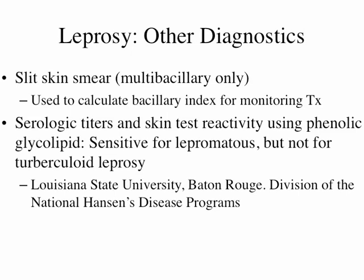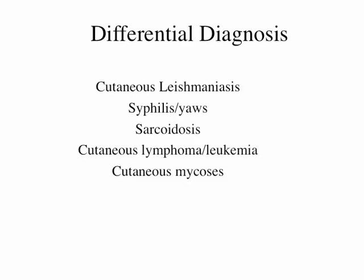You can actually calculate the bacillary index from skin smears, though that's for people who work in the field all the time. A differential diagnosis would be cutaneous leishmaniasis — you'll find people who look just like lepromatous leprosy, where instead of tissue infiltrated with M. leprae, it's now infiltrated with Leishmania of many species.